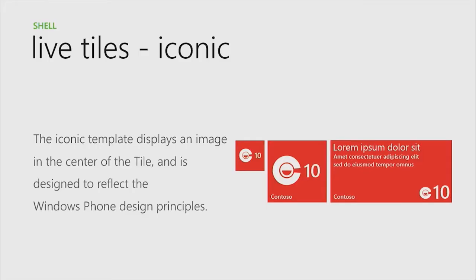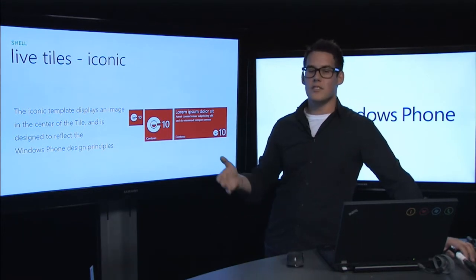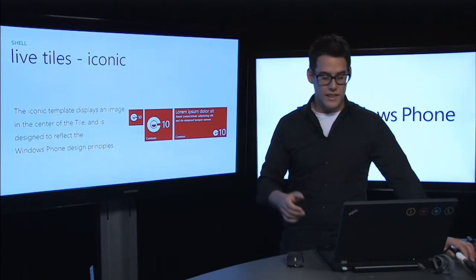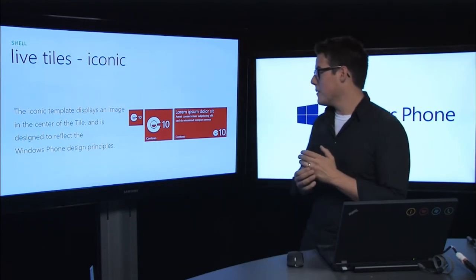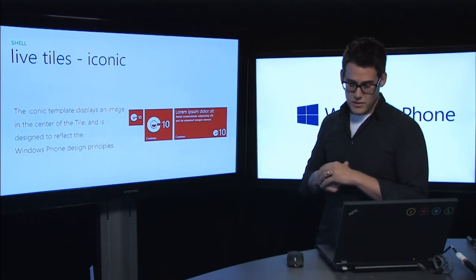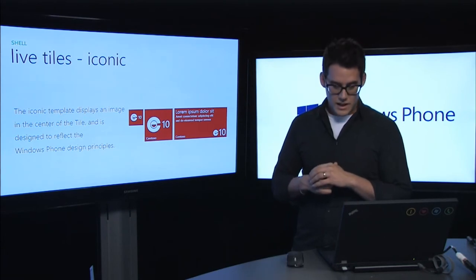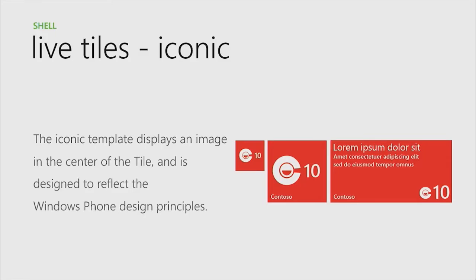The Iconic template displays an image in the center of the tile and is designed to reflect Windows Phone design principles. In the small and medium tile you get the icon; in the large template it appears in the bottom right-hand corner. Good uses include messaging, voicemail, news readers, general communication apps — anything with a counter showing missed items — as well as social networking apps conveying status, timeline updates, and notifications. Bad uses include updates that rely on images to convey meaning, photo feeds, or anything non-iconographic. This template is all focused on icons.